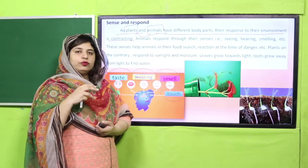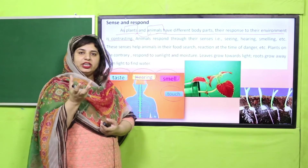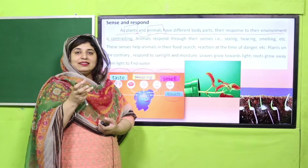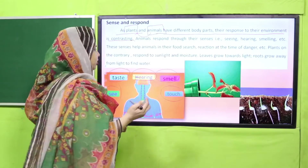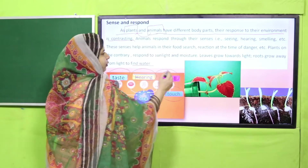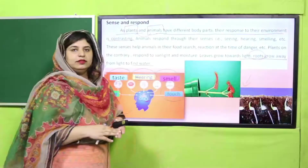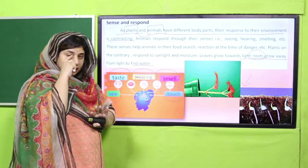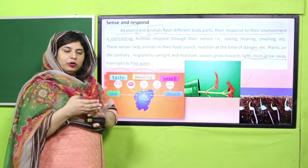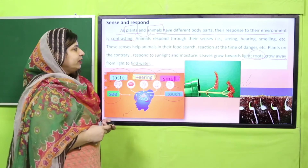Whereas in case of roots — roots, jo plants ki jadein hain — they sense the water or the moisture around them. Moisture kya hai? Pani ya water around them. And their roots grow towards the side where there is water. So how do plants sense their environment? Plants sense light and water, and they respond in this way.